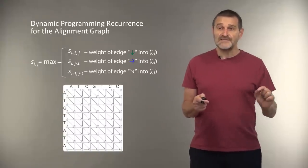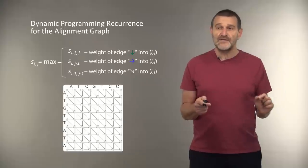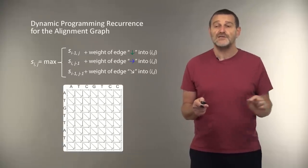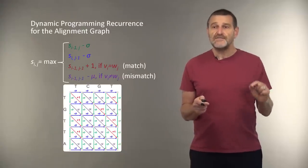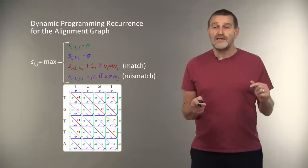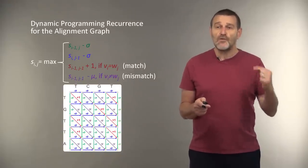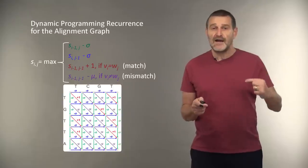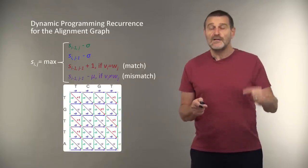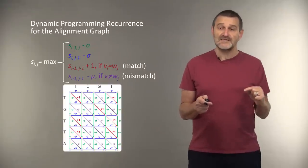Now, in the case we work with scoring matrices, how our dynamic programming recurrency change. Instead of recurrences shown on this slide, we simply have the following recurrences. S_ij equal to four different possibilities, depending on whether we are computing score for insertion, deletion, match, or mismatch, as shown on this slide.